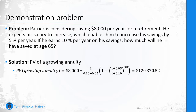We use the same problem from one of the other videos on annuities, where we assume Patrick was 35 years old. This gives us 30 periods — simply add 30 periods to age 35 to get 65. Plugging in the numbers, you get a present value of $120,370.52. This is the amount that the savings will be worth today.